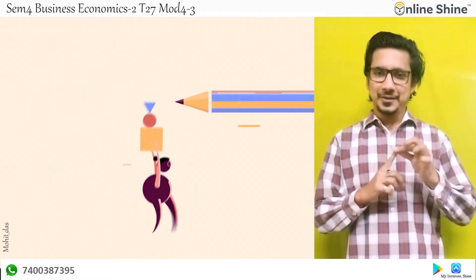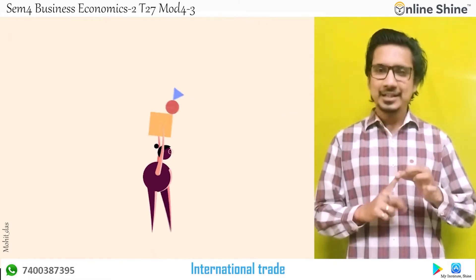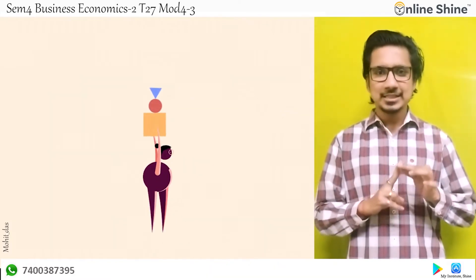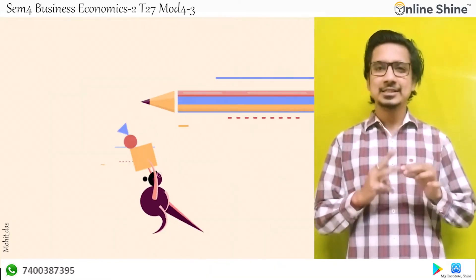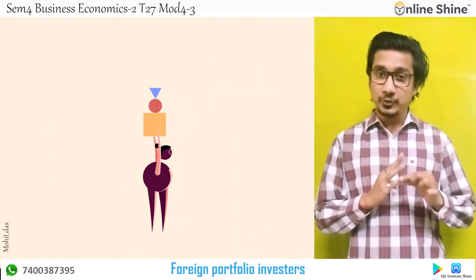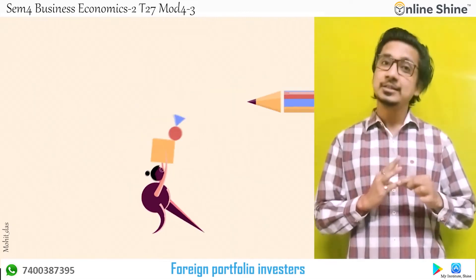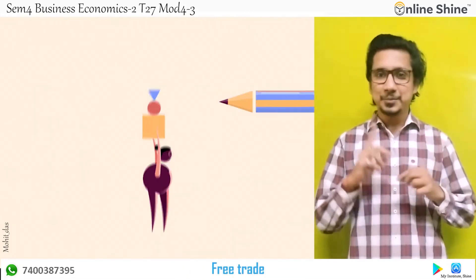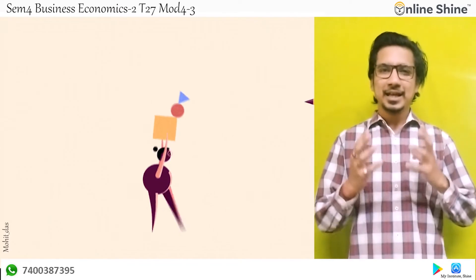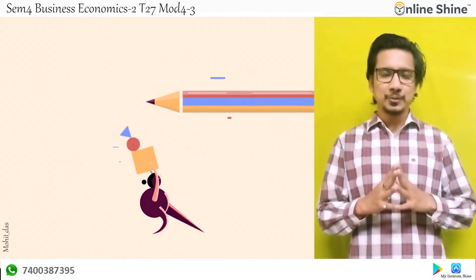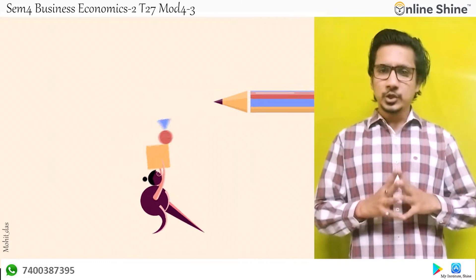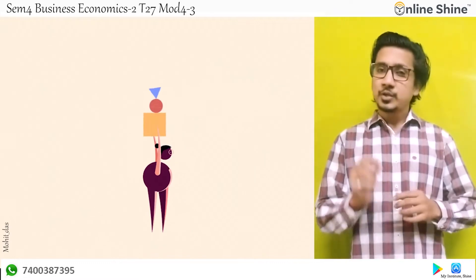Till now in Module 4, what we have spoken about and discussed was International Trade, its Advantages, Disadvantages, Foreign Direct Investment, Foreign Portfolio Investors. Then we spoke about Free Trade, Protectionism, and finally I am here to talk about the Balance of Payment.